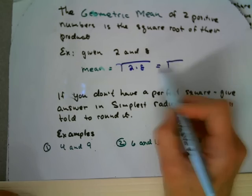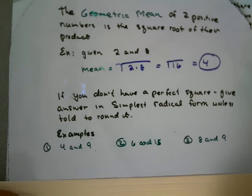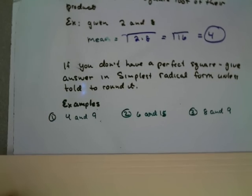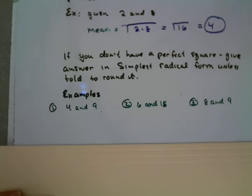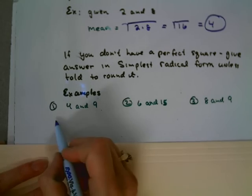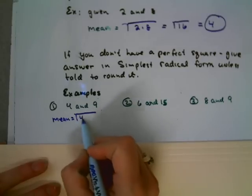So, the only thing here, you know there's always a catch, if you don't have a perfect square, you have to write your answer in simplest radical form. Unless you're told specifically in your homework to round it. So let's look at this. Let's find the mean again. I've got 4 and 9. So I want the square root of 4 times 9. Square root of 36. 6. And you go, whew, that was easy. Didn't have to worry about that. It was a perfect square.